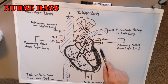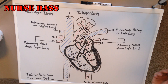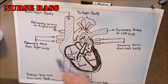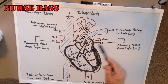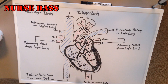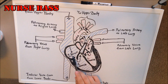We also have the pulmonary veins, which bring the freshly oxygenated blood from the lungs into the left atrium and into the left ventricle to then be pumped throughout the body. Other structures that I was not able to identify — because I didn't want to convolute this diagram any more — are right here, where the blood flows from the right atrium into the right ventricle.